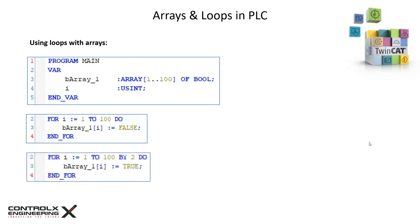In the next example we specify an increment value of two by using the keyword by followed by the increment value, which sets every alternate value in the array to true. This is what it looks like.